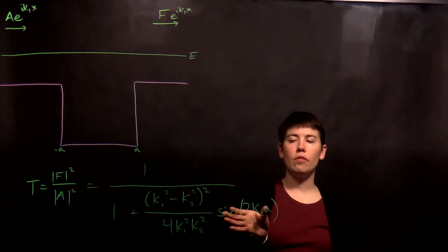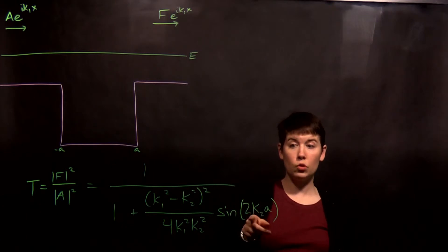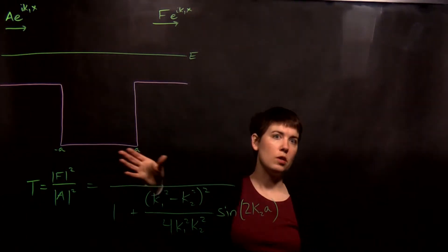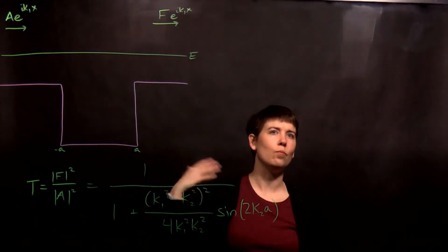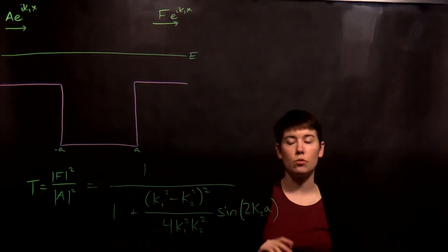Notice that when you have this sort of term, the sine of k2a, that is assuming that you have this sort of width, that the width is going to be 2a. So if your coordinate system is different, make sure you adjust accordingly.